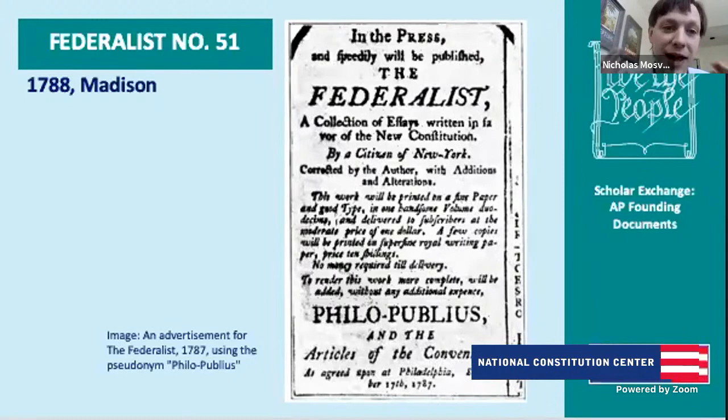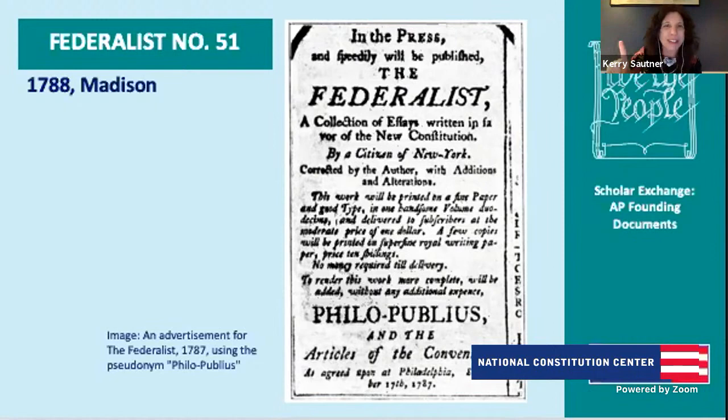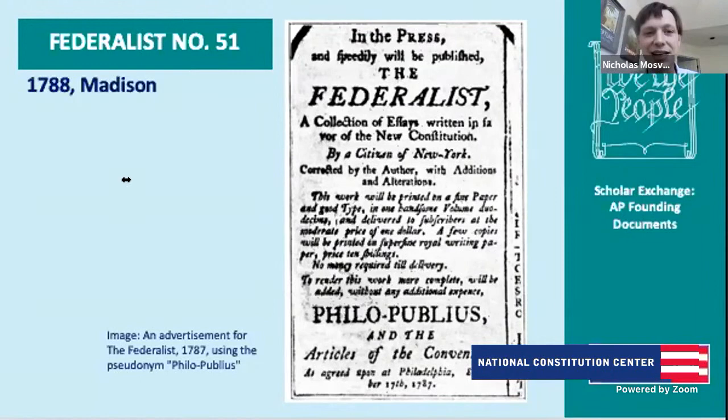His assessment is that we should take human nature into account when we write a constitution and create a structure for government. We need virtue amongst the people, but we cannot merely rely upon it — we need a structure that protects against bad behavior. This leads perfectly into Federalist 51. As Madison says rather famously: if men were angels, we would need no government — but they're not.